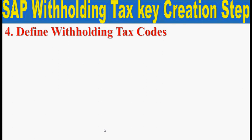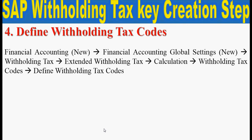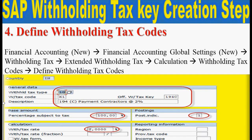The fourth step is to define the withholding tax code. Go through this path: Financial Accounting New > Financial Accounting Global Settings New > Withholding Tax > Extended Withholding Tax > Calculation > Withholding Tax Codes > Define Withholding Tax Codes. Click on new entries, enter your withholding tax type, then the code, description, offsetting account, percentage subject to tax, posting indicator, and the rate of withholding tax.